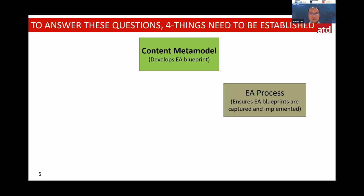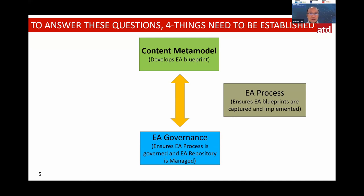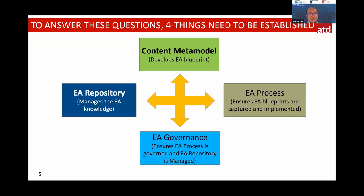Third is governance — everything we put in place around content and process must be governed. In financial services, governance is stringent due to audit, review, and compliance with the central bank. Governance itself needs to be automated; we don't do manual intervention unless necessary. Fourth, and last, is the right EA repository. Most organizations have some repository, but some use Excel or configure it incorrectly. The meta model, process, and governance all need to be embedded in the repository to get the maximum outcome, so architects can answer stakeholder questions on demand.